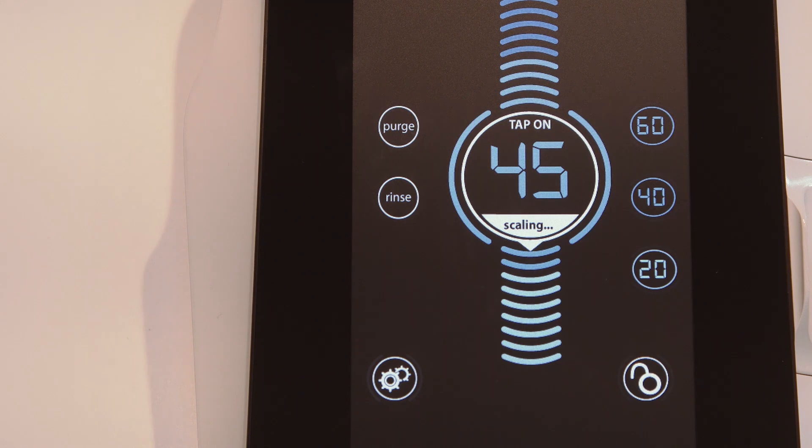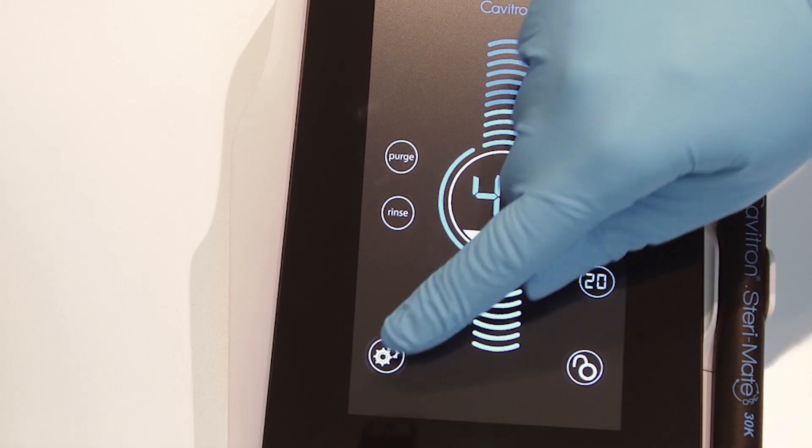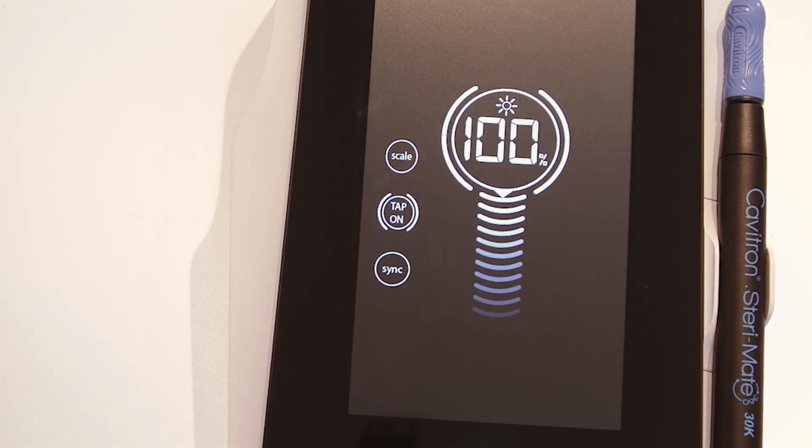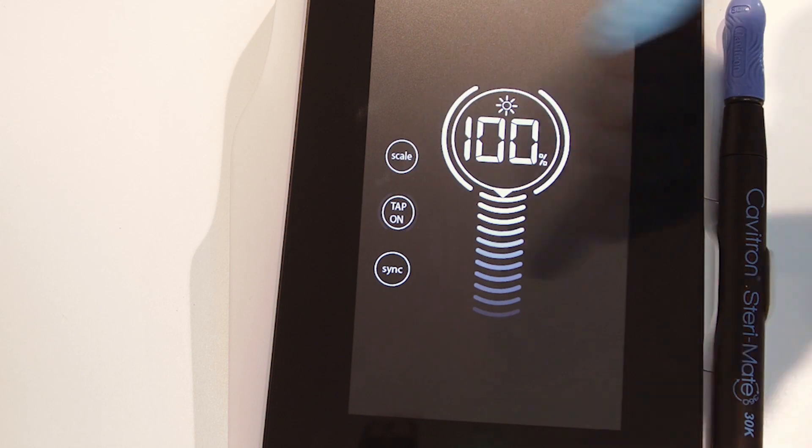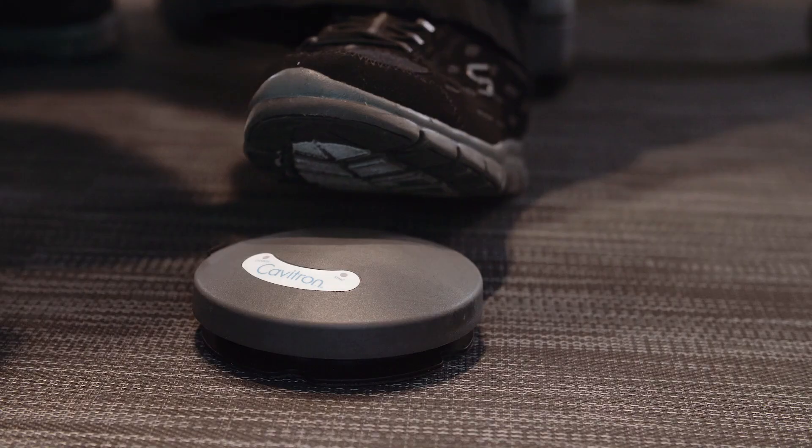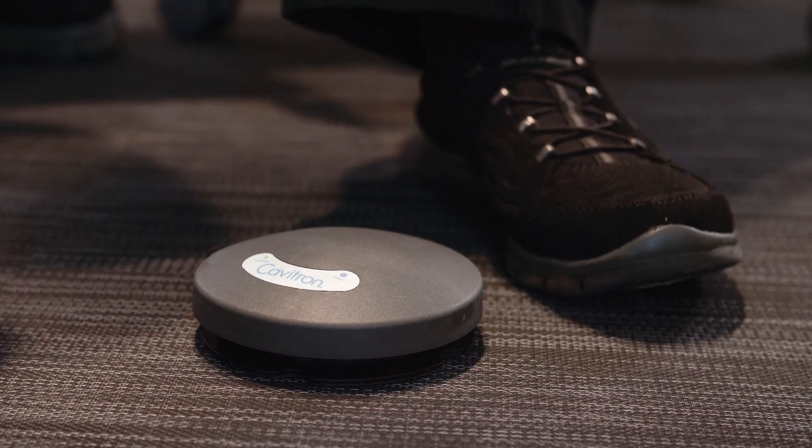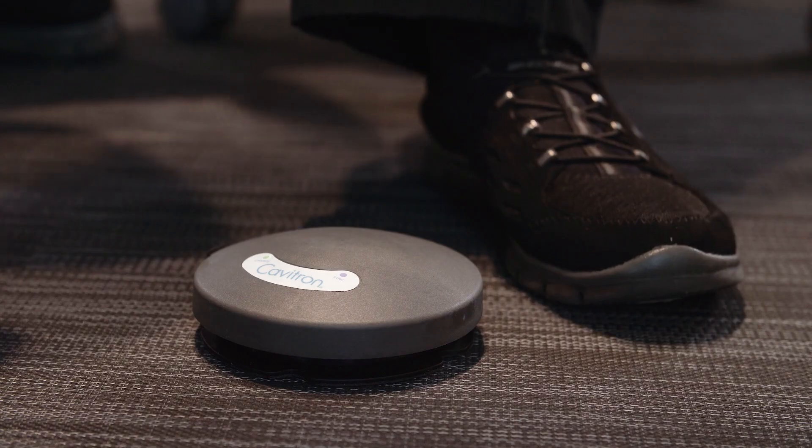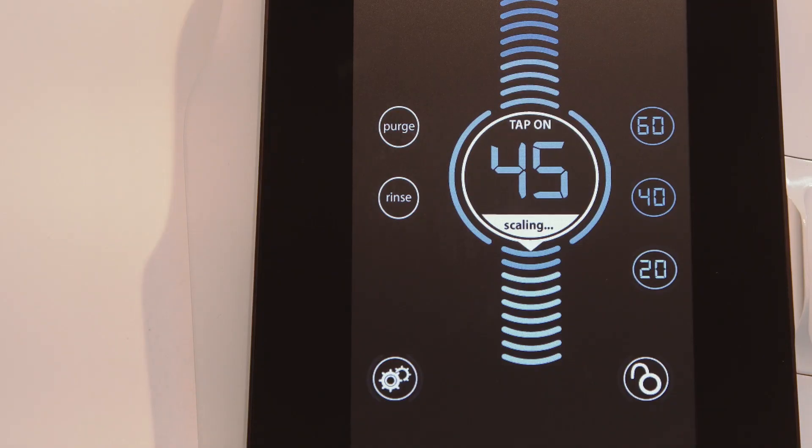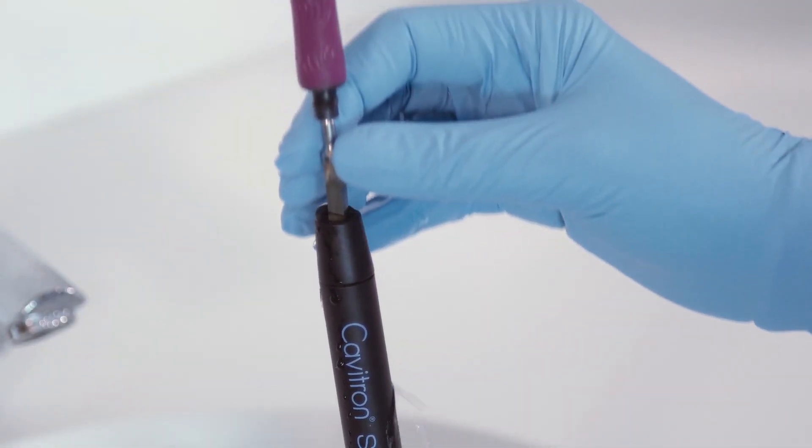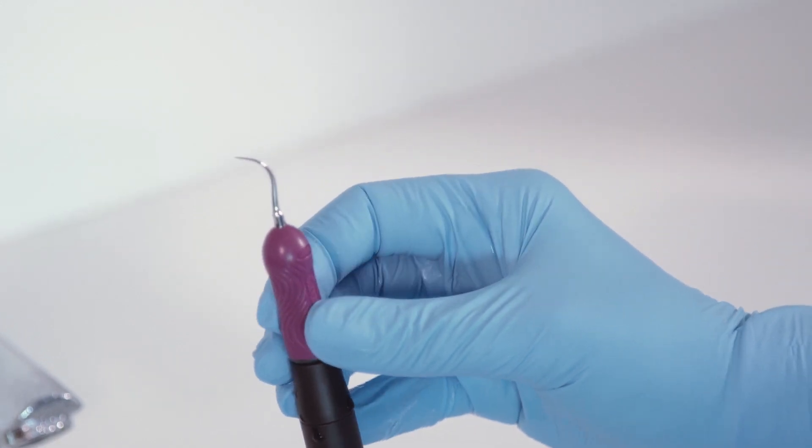This feature eliminates the need to hold down or pump the foot pedal, adding comfort to your routine. Enter the settings screen to enable or disable tap-on. When parentheses are shown around the tap-on icon, tap-on is activated. If there are no parentheses visible, tap-on is deactivated and the icon will be grayed out. With tap-on technology activated, tapping on the foot pedal once will activate ultrasonic power for approximately four minutes. Tapping the foot pedal a second time will disable ultrasonic power and water flow. On the main scaling screen, a tap-on indicator will appear in the power level display while scaling. Please note that tap-on technology only operates when an insert is seated in the handpiece.